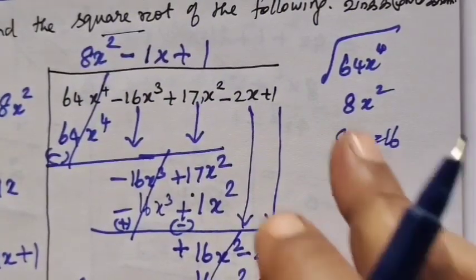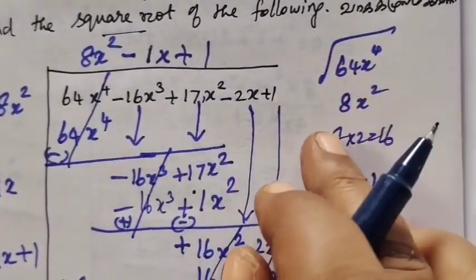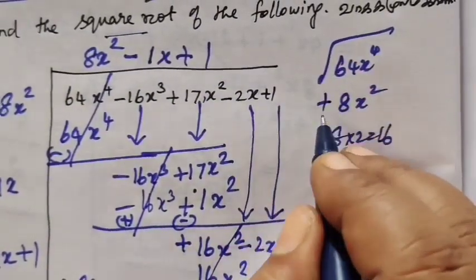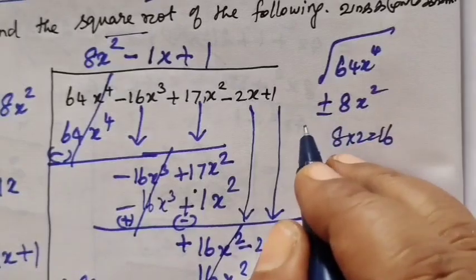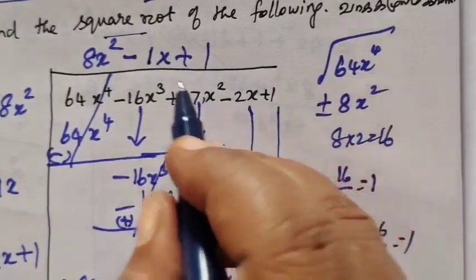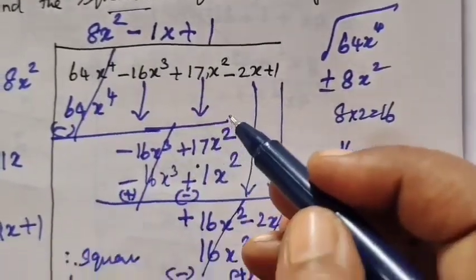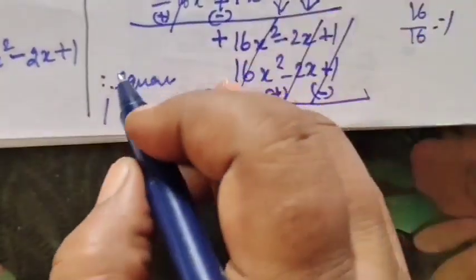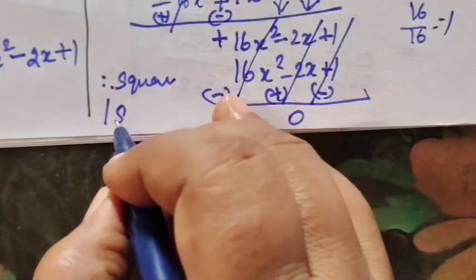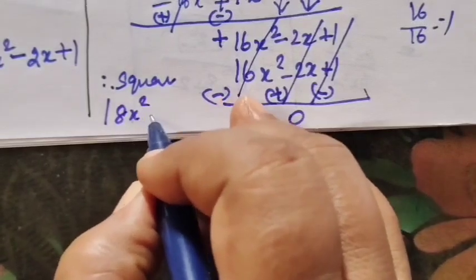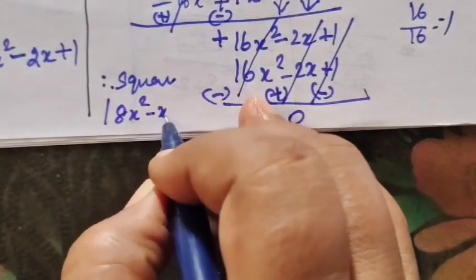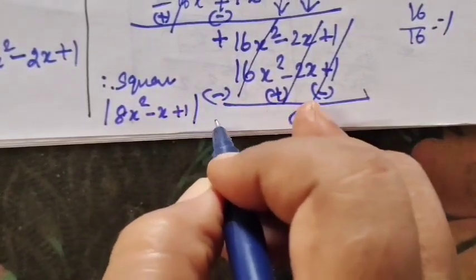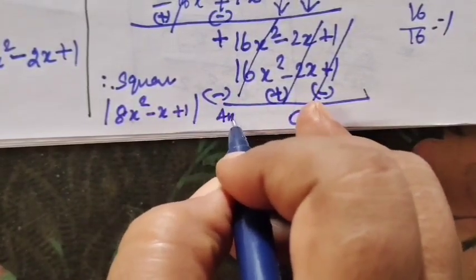If we write the plus or minus, we can write the plus or minus. That's why the answer is 8x squared minus 1x plus 1. So 8x squared minus 1x plus 1. So this is the answer.